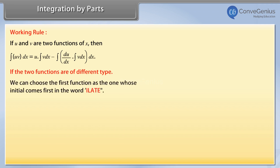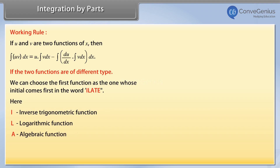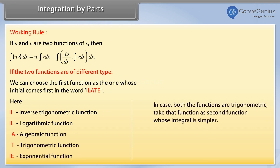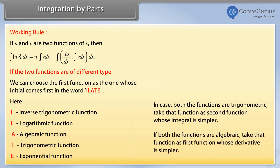In ILATE: I means inverse trigonometric function, L means logarithmic function, A means algebraic function, T means trigonometric function, and E means exponential function. In case both functions are trigonometric, take that function as the second function whose integral is simpler. If both functions are algebraic, take that function as the first function whose derivative is simpler.